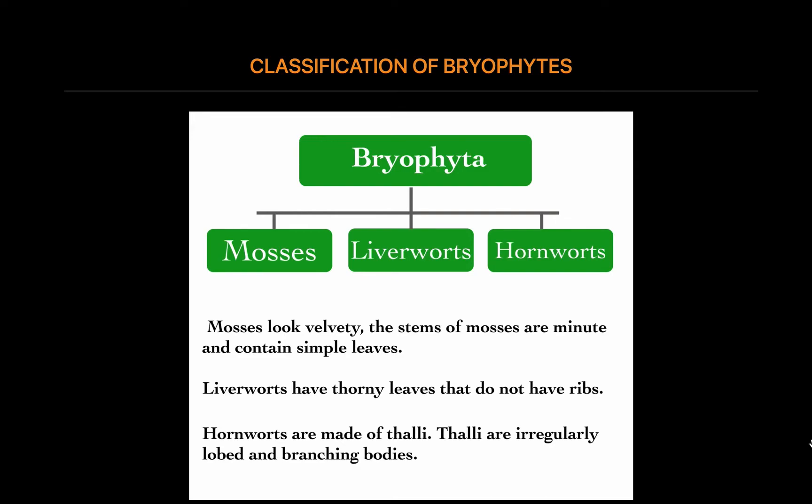Liverworts have flattened gametophytes with lobes that look like those of a liver, hence the name liverwort. The physiological and biological systems are less complex in the liverworts as compared to the mosses. In liverworts, both sexual and asexual reproduction can take place.